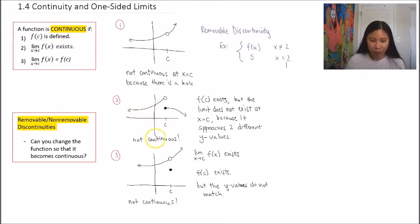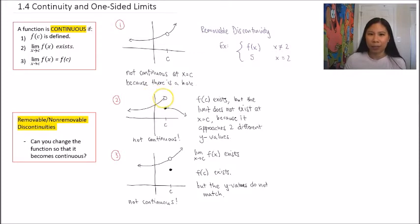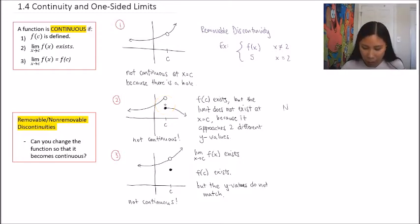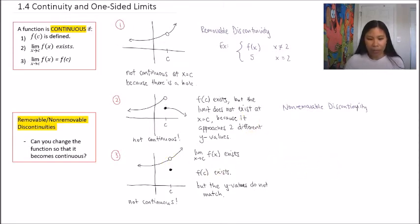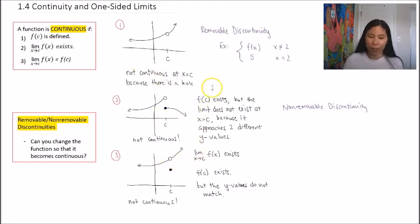For graph number two, even if I tried to plug a hole, this would still be discontinuous because we have a gap in between — there's no way to fix that gap. So this is a non-removable discontinuity. The third graph is similar to the first: because we have a hole, we can plug it in with some other point and that would make it continuous.